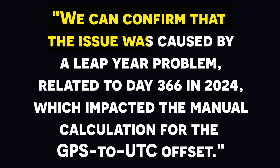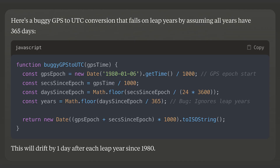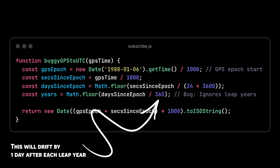The cause? A spokesperson told The Register: "We can confirm that the issue was caused by a leap year problem related to day 366 in 2024, which impacted the manual calculation for GPS to UTC offset." I'm honestly quite impressed they admitted that much. We don't know the exact calculation they were using. I asked Claude for some buggy GPS to UTC code, and it gave me this using JavaScript. Both formulas would have had the same issue of assuming a year was 365 days, when last year's was 366.